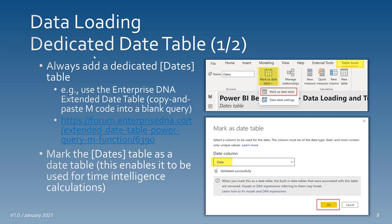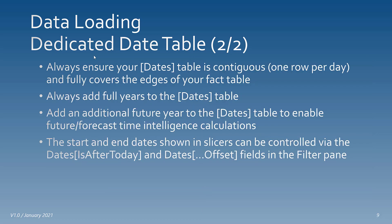Once you have a dedicated dates table, you need to mark it as such so it can be used by Power BI for time intelligence calculations. Always ensure your dates table is contiguous — one row per day — and that it fully covers the edges of your fact tables. Always add full years, and it's a good idea to add an additional future year to enable forecast or future time intelligence calculations. If you have more days than you want shown on your report, you can control what's shown in slicers using the 'is after today' column or the offset columns in the filter pane.